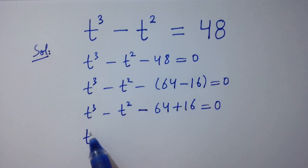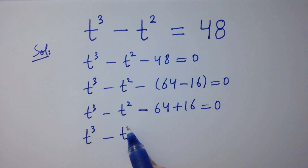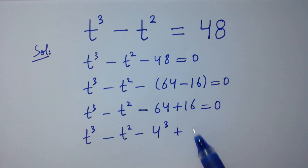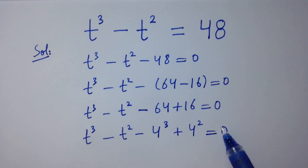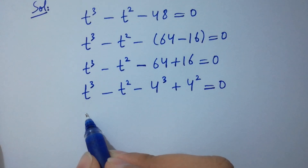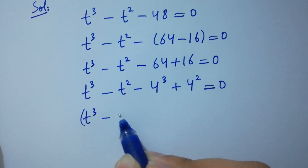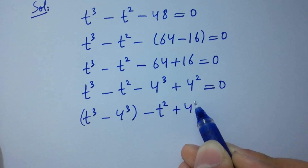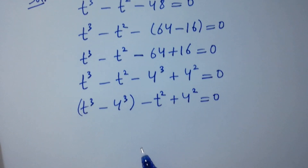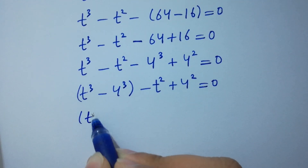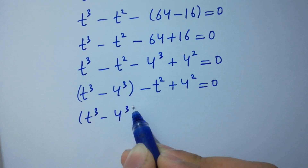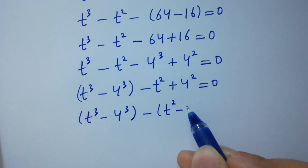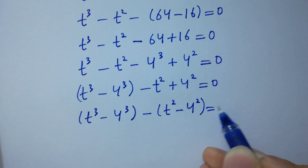We recognize that 64 is 4 cubed and 16 is 4 squared, so we have t cubed minus 4 cubed minus t squared plus 4 squared equals zero. We take common factors: t cubed minus 4 cubed minus common t squared, we have minus minus plus 4 squared equals zero.